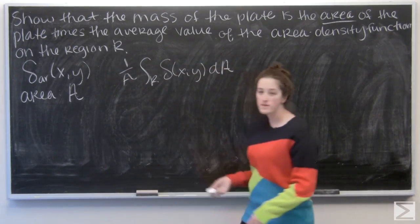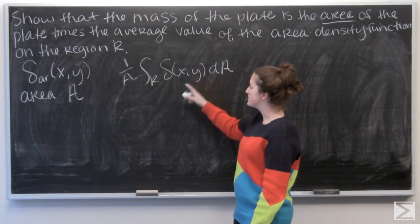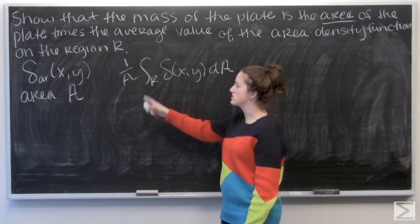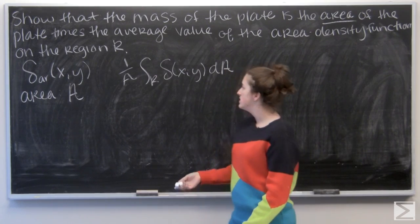So something like this: integral over the region of the area density function, divided by area.